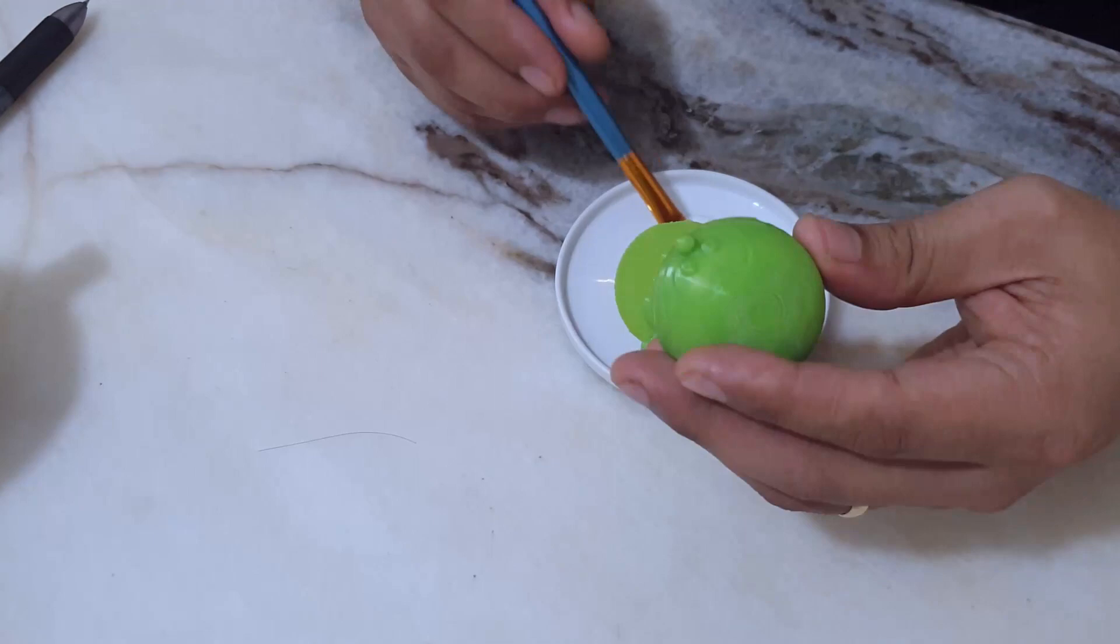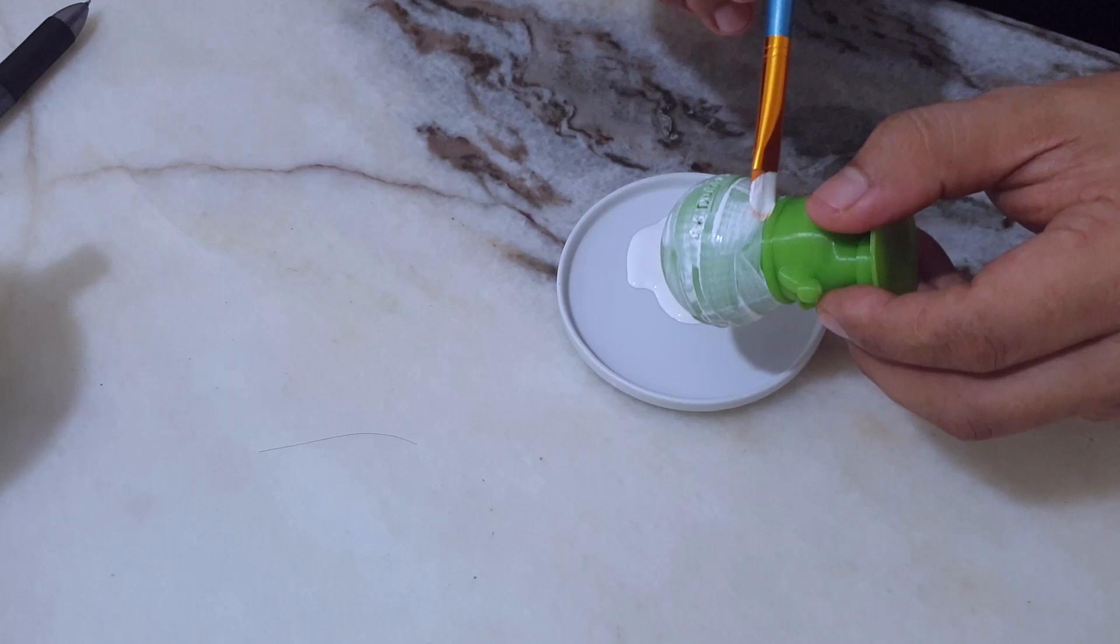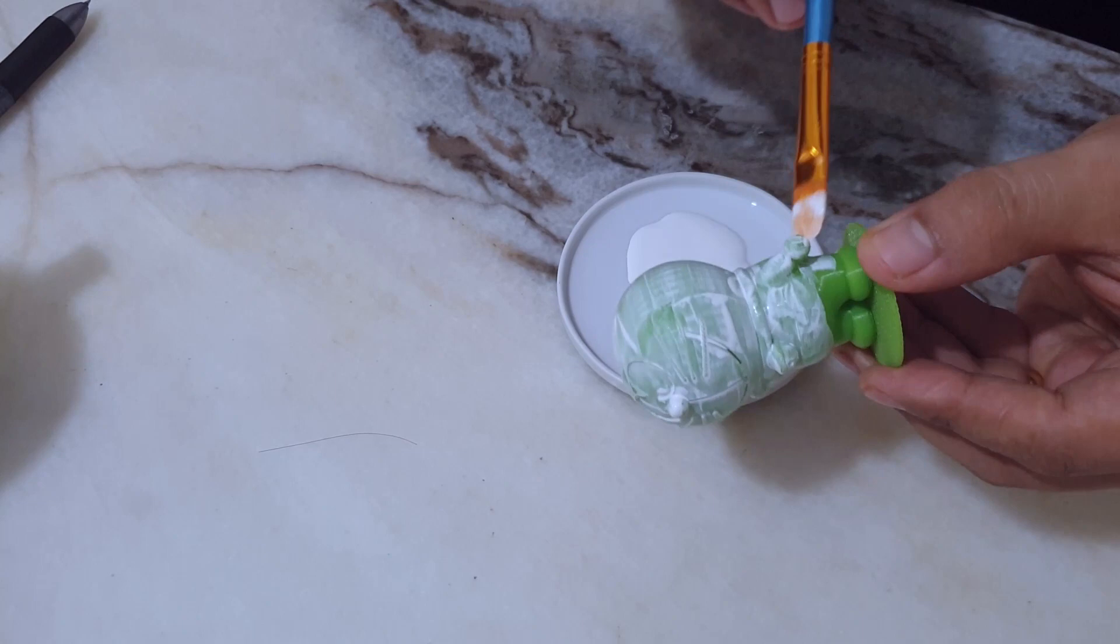I have done a 3D print of Doraemon for quite some time now. This is included in the very first prints that I did when I set up my Ender 3 and it is printed using a green PLA.